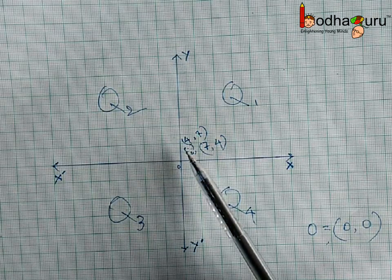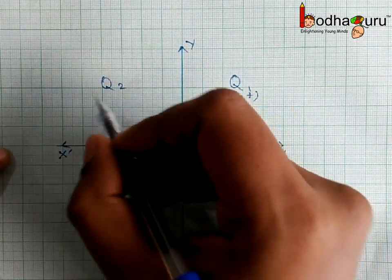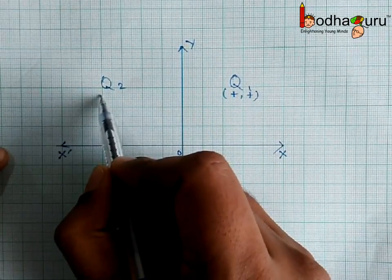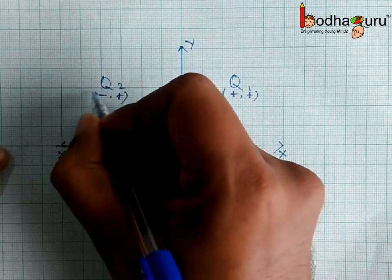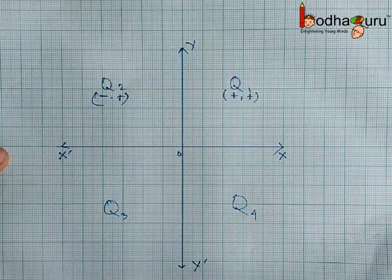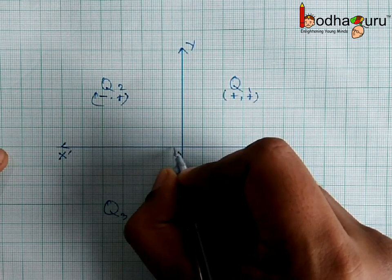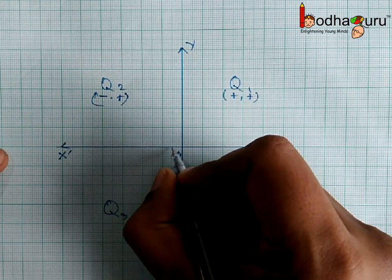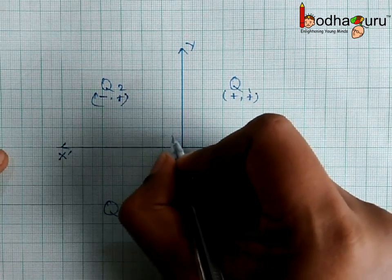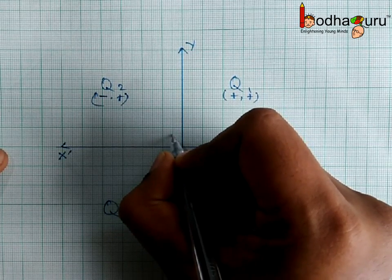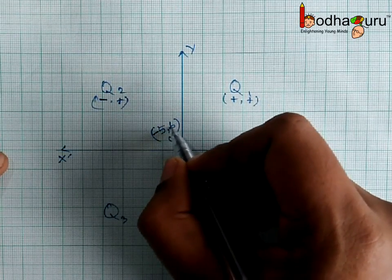If we take any point in quadrant 2, x is negative as it is on the left of the y-axis, and y is positive as it is above the x-axis. We again start from (0, 0), go left by 5 units to find x equal to minus 5, then go up from here 6 units to get y equal to 6. So this point is (−5, 6).